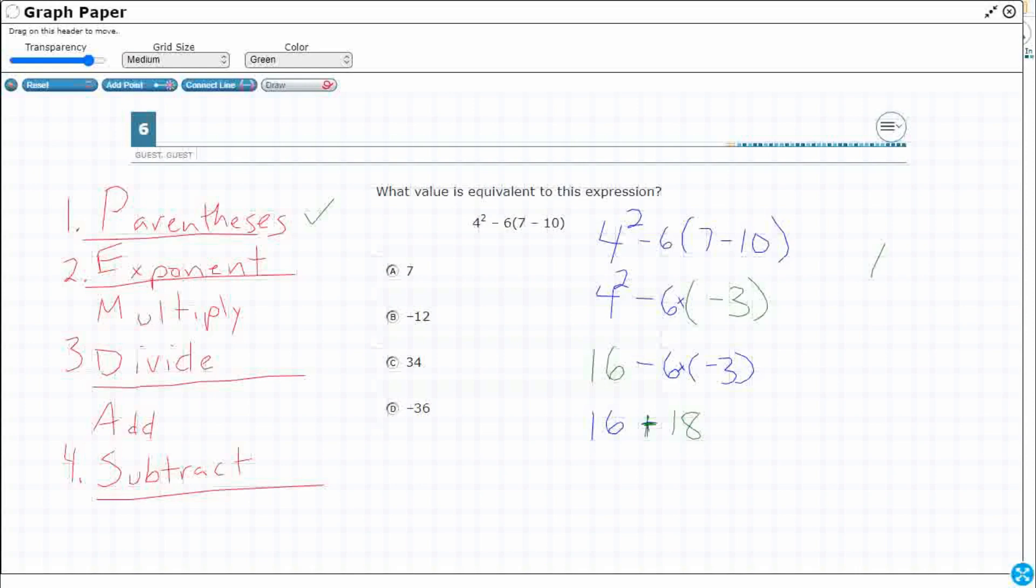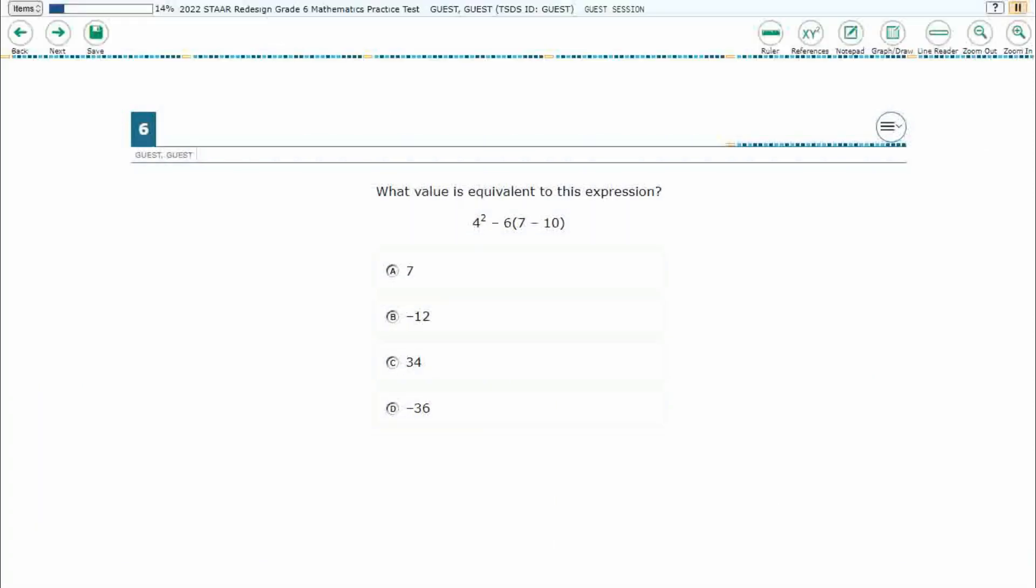16 plus 18. I need to regroup there. So let's go ahead and do that. Look at that. So there's my positive 34. So always make sure we do one step at a time. We actually did all four levels. My answer here is going to be C.